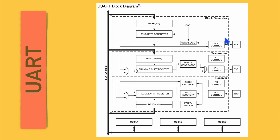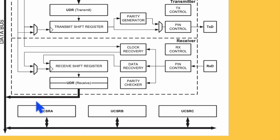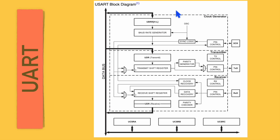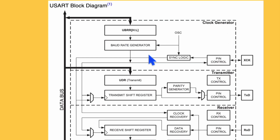In the block diagram, configuration is done using three control registers: UART Control and Status Register A, B, and C. These three registers configure the desired baud rate, the transmitter, and the receiver. For clock generation, there is a UBRR (UART Baud Rate Register), which is a 16-bit register (high and low). Based on the value written to UBRR, it generates the desired baud rate from the oscillator.